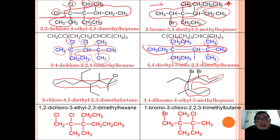Hopefully you are now able to follow the step-by-step approach to naming haloalkanes. If time allows, we will go through these more slowly. That completes nomenclature, and we move on to isomerism in haloalkanes.